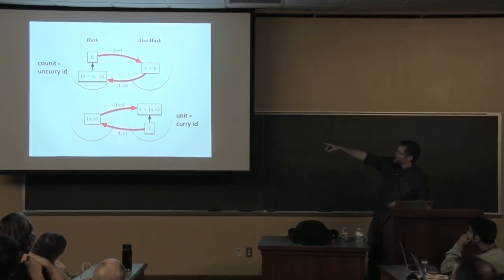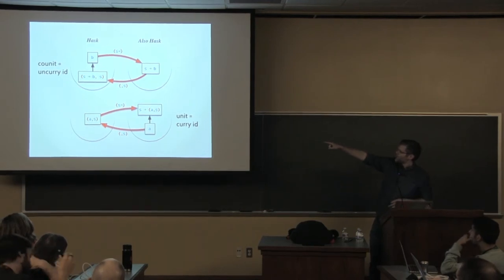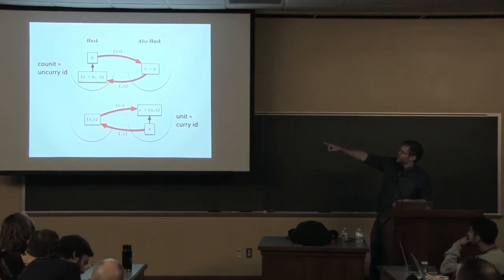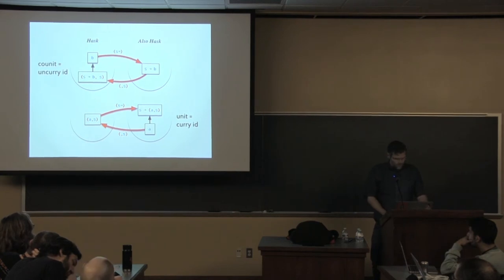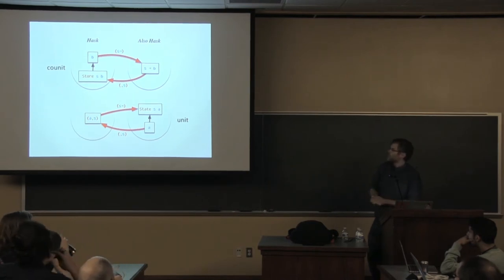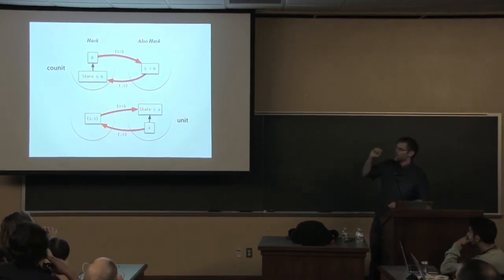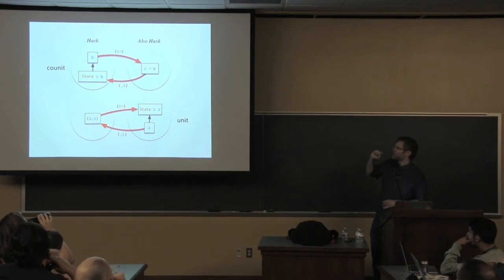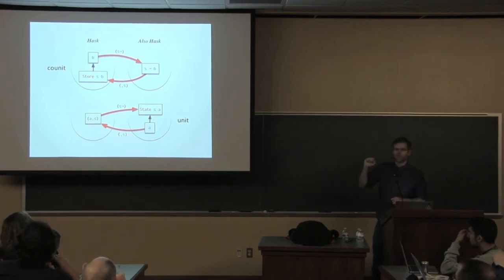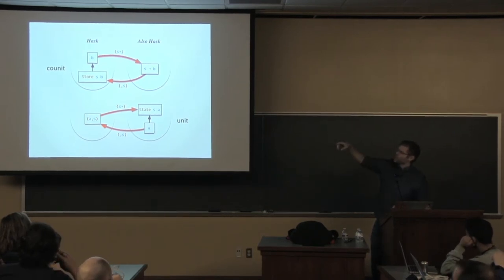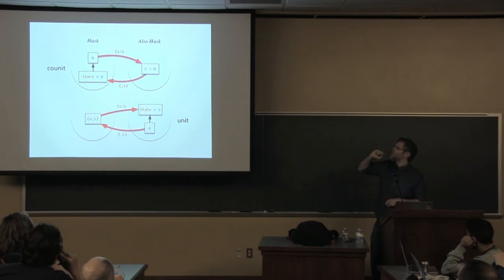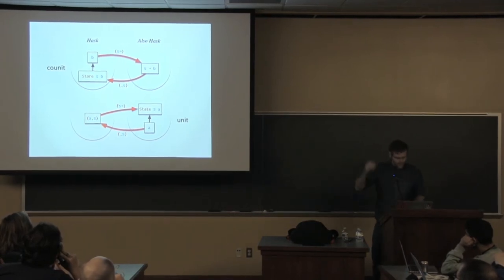Notice that the return type of this unit goes from S to a pair of A and S. To lots of functional programmers, that should be very familiar — that's the state type, the state monad. What we actually got by currying identity was the unit for the state monad. And we also get a co-unit for a store co-monad on the other side, if we uncurry identity.